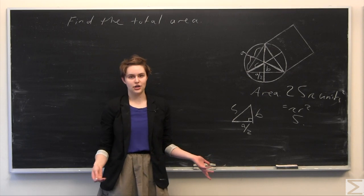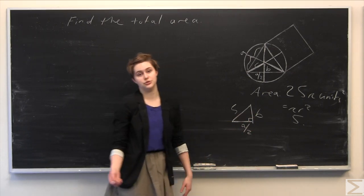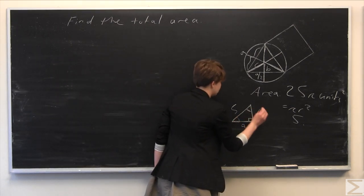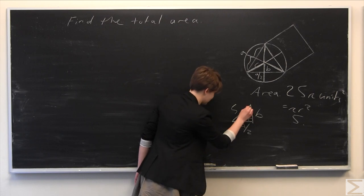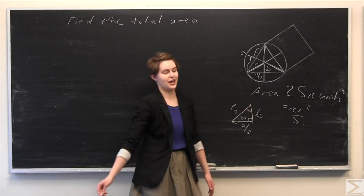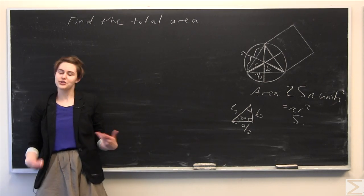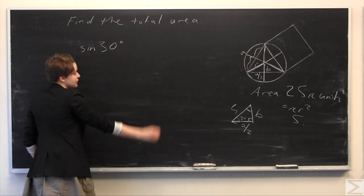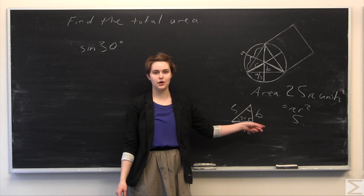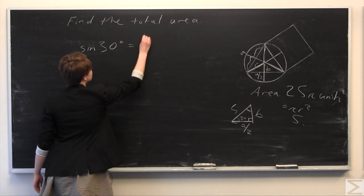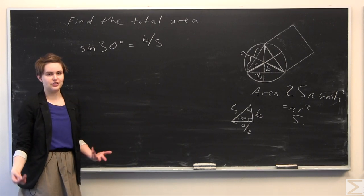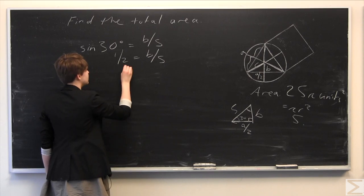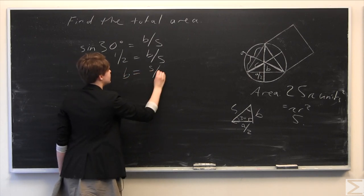Now we can solve for b and a/2 using our knowledge of the 30-60-90 triangle. This is the 30-degree angle and this is the 60-degree angle. Based on our knowledge of the unit circle, the sine of 30 degrees equals the opposite over the hypotenuse, so b over 5. Since sine of 30 degrees is 1/2, we get 1/2 = b/5, so multiplying both sides by 5, b equals 5/2.